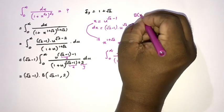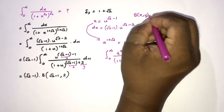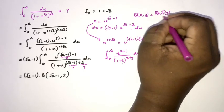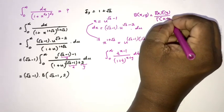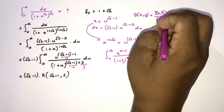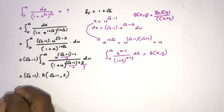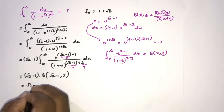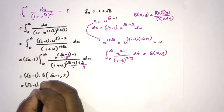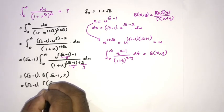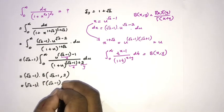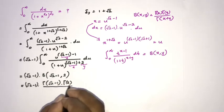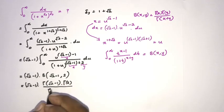Using the relation between the beta function and the gamma function — beta(x, y) equals gamma(x) times gamma(y) over gamma(x plus y) — we can write our expression as square root of 2 minus 1 times gamma(square root of 2 minus 1) times gamma(2), all over gamma(square root of 2 plus 1).